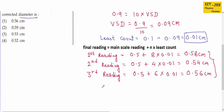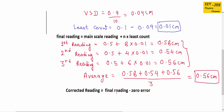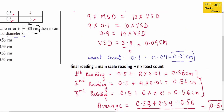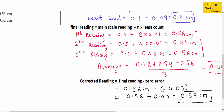Now we have three readings: 0.58 cm, 0.54 cm, and 0.56 cm. To find the average, we add all readings and divide by 3: (0.58 plus 0.54 plus 0.56) divided by 3 equals 0.56 cm. This is our average final reading. But the question asks for the corrected reading, so we subtract the zero error. The zero error is given as minus 0.03 cm, so: corrected reading equals 0.56 minus (minus 0.03), which gives 0.56 plus 0.03 equals 0.59 cm. This is the corrected mean diameter of the steel ball.